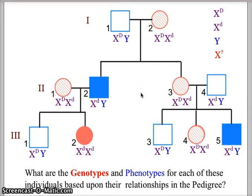These are all examples of how to use the generations and evidence from each of those generations to determine the phenotypes and genotypes of individuals for certain traits and characteristics using Mendelian genetics.